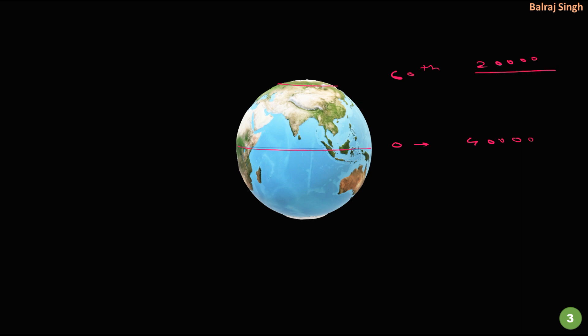From this information we can calculate the speed if we divide it by 24, because our earth completes a spin in 24 hours. We know that speed is equal to distance upon time. So here on the equator we get a speed of approximately 1666 kilometers per hour, and at the 60th parallel we get a speed of 833 kilometers per hour.